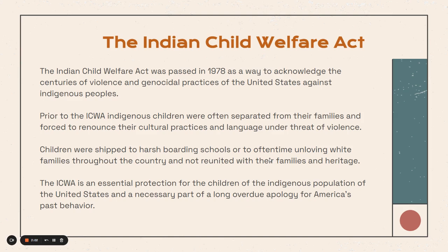The Indian Child Welfare Act was passed in 1978 as a way to acknowledge the centuries of violence and genocidal practices of the United States against Indigenous peoples. Prior to the ICWA, Indigenous children were often separated from their families and forced to renounce their cultural practices and language under threat of violence. They couldn't speak their own languages, practice their own religions, or maintain their own cultural customs. Children were shipped to harsh boarding schools or to oftentimes unloving white families throughout the country and not reunited with their families and heritage. The ICWA is an essential protection for these children and a necessary part of a long overdue apology for America's past behavior.